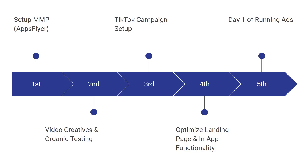First, what we're going to figure out is how you can set up your MMP, your mobile measurement partner. Second is how you can create video creatives using organic testing. Third is TikTok campaign setups — we're going to go through one of the strategies that you can use to set up your campaigns for a low budget.